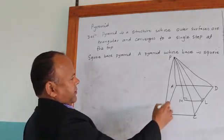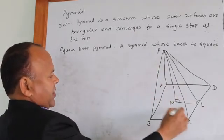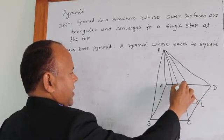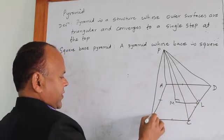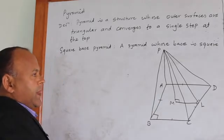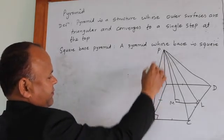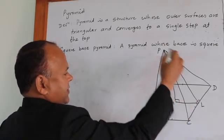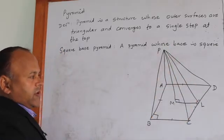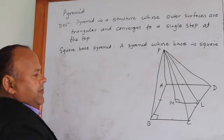We may see here this is a pyramid. A, B, C, D is the base and it is square. A, B, C, D is a square and these triangular faces P-B-C, P-C-D, P-A-D, and P-A-B are the triangular faces. It is the square base pyramid.